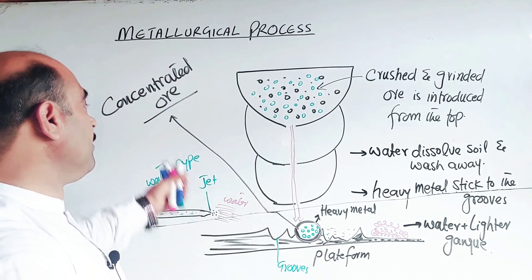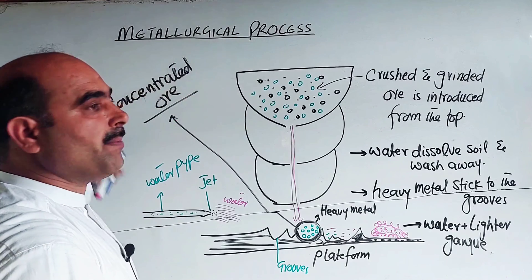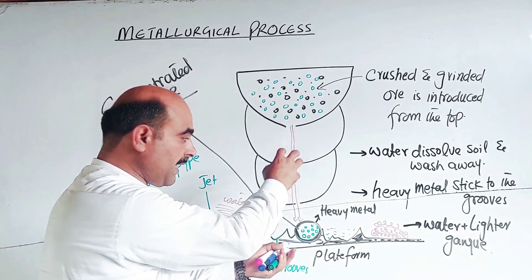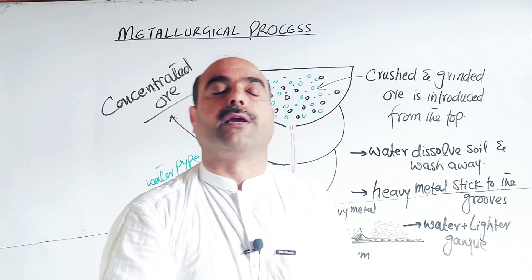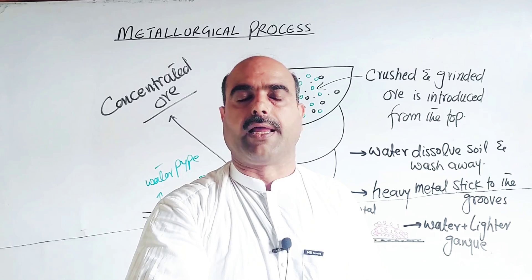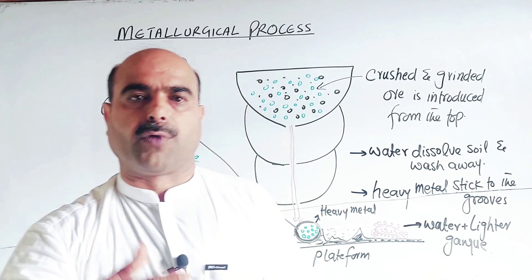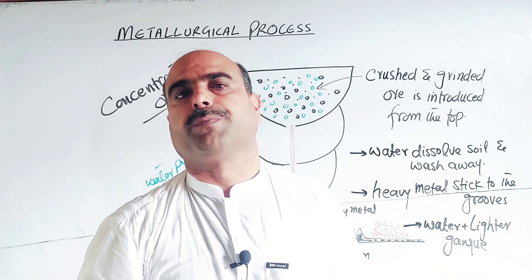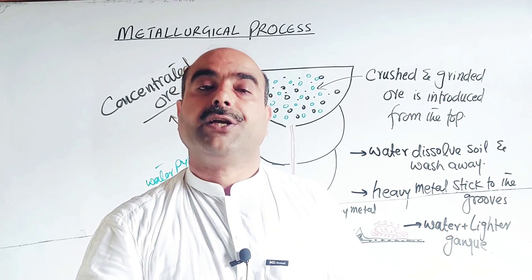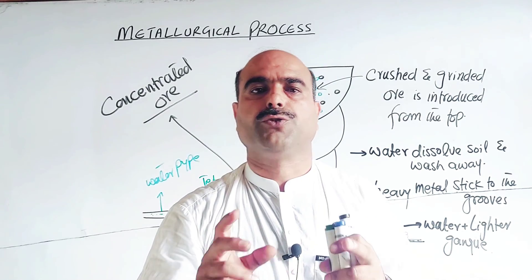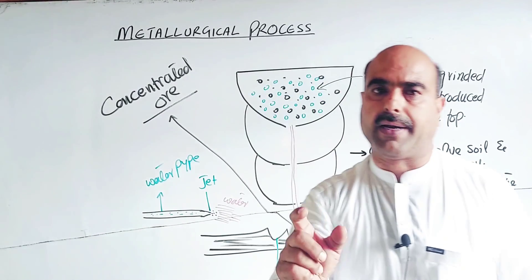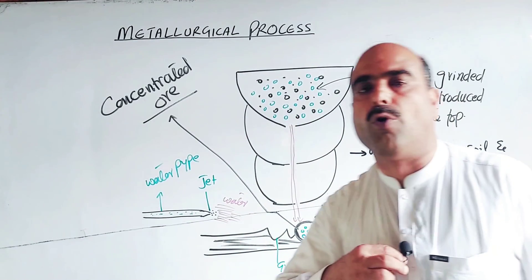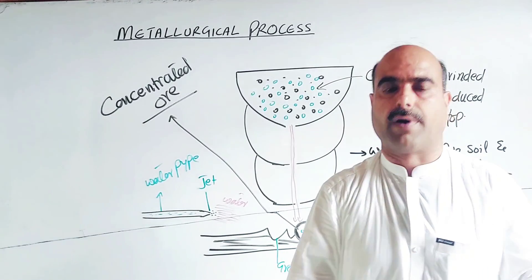So in this way, through these methods, the ore is concentrated, dressed, and beneficiated. In the next steps — which we will discuss in the next video, Inshallah — we will cover roasting, smelting, calcination, and the flotation process. These were all about the first step of metallurgical processes: concentration of ore, dressing of ore, or beneficiation of ore. Thanks a lot for watching.